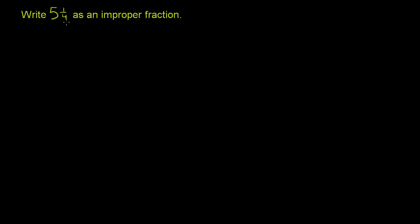Write 5 and 1/4 as an improper fraction. An improper fraction is a pure fraction where the numerator is greater than the denominator. This right here is not a pure fraction — we have a whole number mixed with a fraction, so we call this a mixed number.